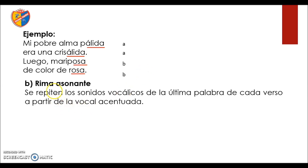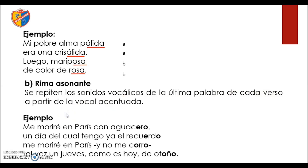Veamos ahora la rima asonante, ¿en qué consiste? En la repetición de los sonidos vocálicos de la última palabra de cada verso a partir de la vocal acentuada. Observen el ejemplo: 'Me moriré en París con aguacero, un día del cual tengo ya el recuerdo. Me moriré en París y no me corro, tal vez en jueves, como es hoy de otoño.' Observamos estas vocales que están resaltadas. En eso consiste la rima asonante. Se repiten los sonidos vocálicos: en el primer verso coinciden las vocales E y O, al igual que en el segundo verso.